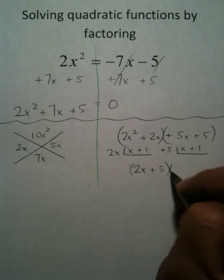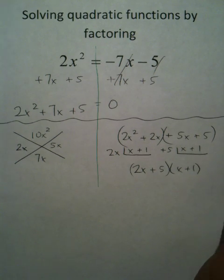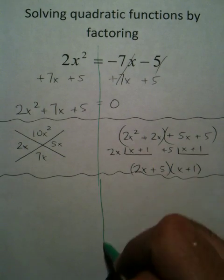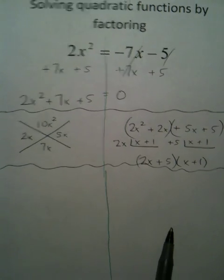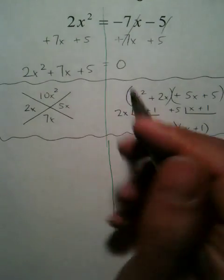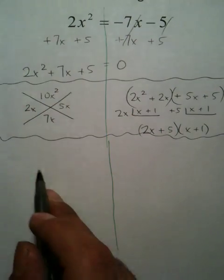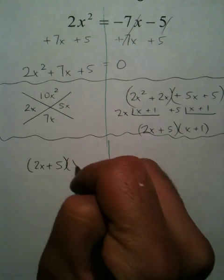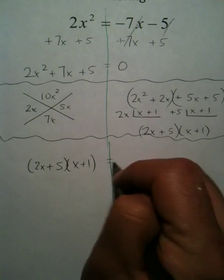2x plus 5 and x plus 1 are your factors. Now, that was scratch work. Because what you're really saying is, I had this on the left-hand side, which factored out to 2x plus 5, x plus 1, and that equals 0.